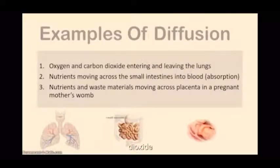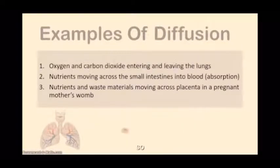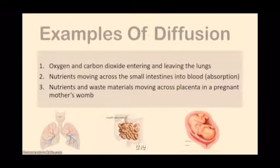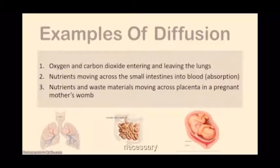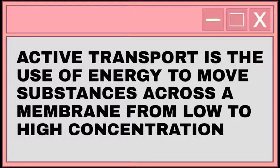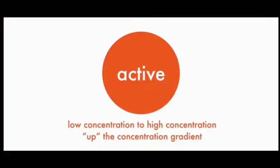Examples of diffusion: 1. Oxygen and carbon dioxide entering and leaving the lungs. 2. Nutrients moving across the small intestines into blood — the process of absorption. 3. Nutrients and waste materials moving across the placenta in a pregnant mother's womb. Active transport is the use of energy to move substances across a membrane from low to high concentration — the opposite of passive transport — requiring ATP (adenosine triphosphate).